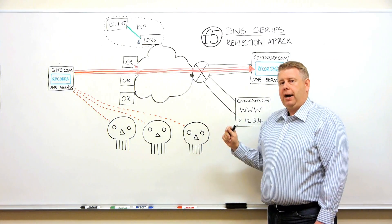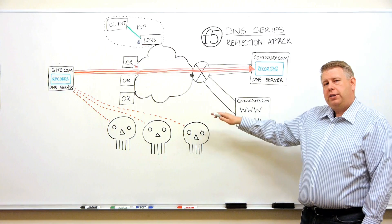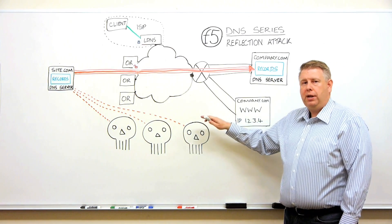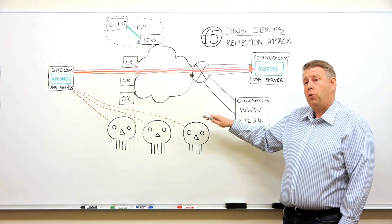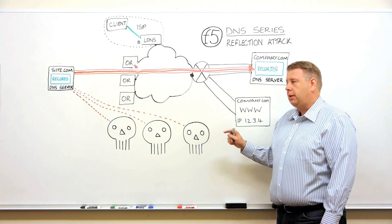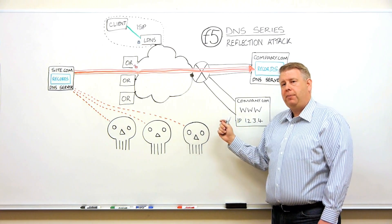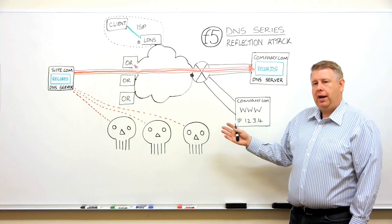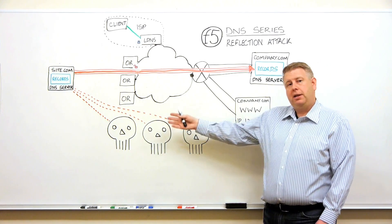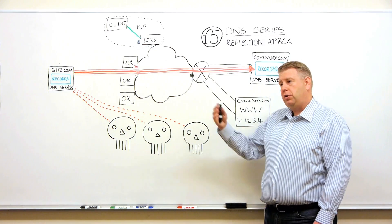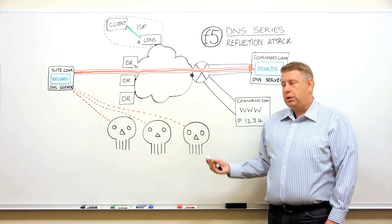In the reflection attack, the attackers are taking advantage of a vulnerability in the underlying protocol used for DNS. Remember, it's like a package. You send a package and every package has a mailing address. You give it the destination address and you also put a return address so the person you're sending the message to can send back a response.